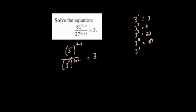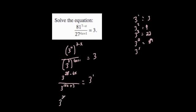Rewriting: 3 to the power of 4, all to the power of 7 minus x, divided by 3 cubed to the power of 4x plus 1, equals 3 to the power of 1. Multiplying the powers: numerator gives 3 to the power of 28 minus 4x (since 4 times 7 is 28), denominator gives 3 to the power of 12x plus 3 (since 3 times 4x is 12x and 3 times 1 is 3). Dividing means subtracting the powers.